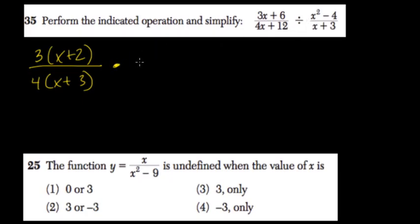Divided by this next fraction, so we're going to multiply by the reciprocal. x plus 3 over x squared minus 4 is the difference of two squares. So we take the square root of both, it's x and 4, set up our parentheses, and then add and subtract.